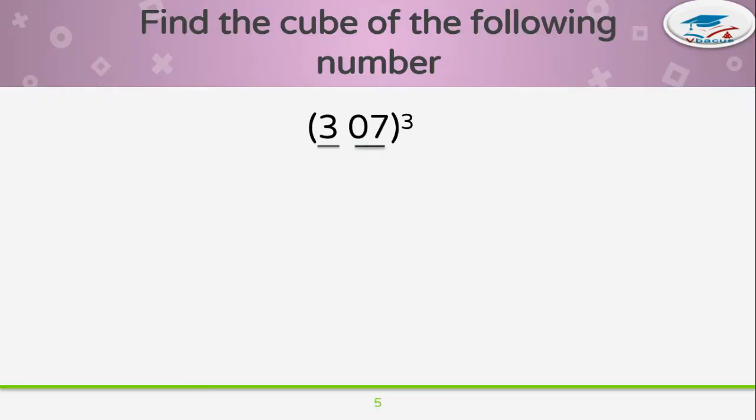Let us take one more example that is slightly tricky: 307. Again make it into two parts - first is 3, second is 07. Now insert 4 dashes. On first dash, write the cube of 3, that is 27. Write the cube of 7, that is 343.